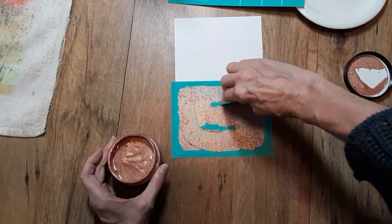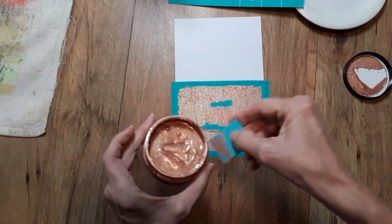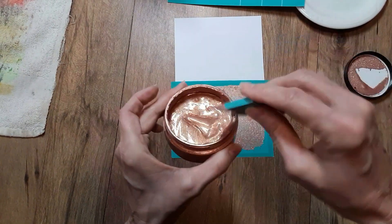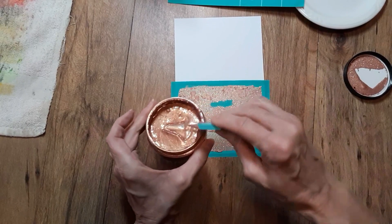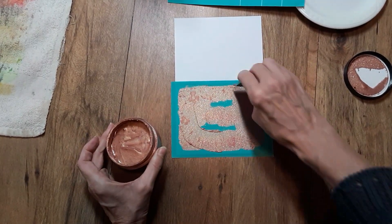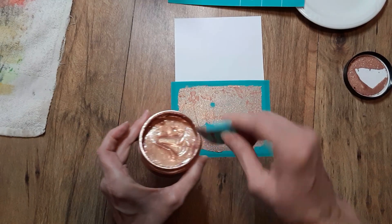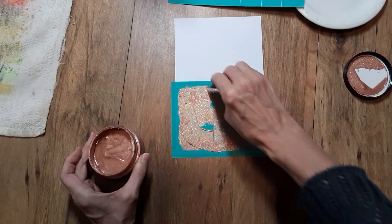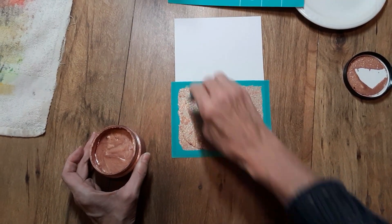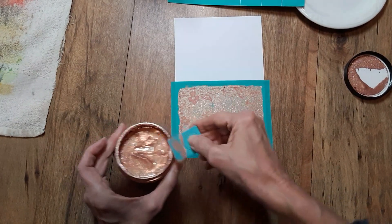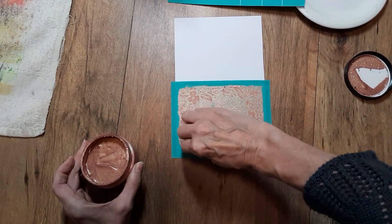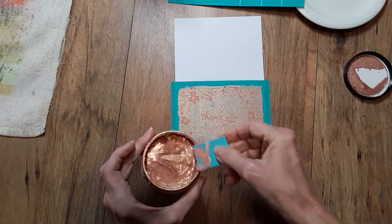All right, I have this on here. So, what I'm going to do now is I scraped off the excess on the side of the jar, inside the jar there. And I'm just going to, with that same bevel edge, just go back over this to make sure I have good, even coverage and take off that excess that I have on my transfer there. It is that quick and that easy.